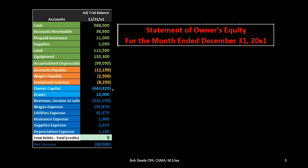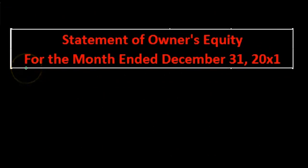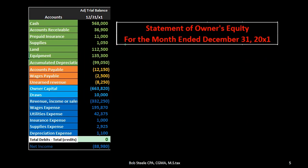Now we're going to construct the statement of owner's equity. Note that we're going to have 'for the month ended December 31, 20X1' — similar to the income statement, this is a timing statement rather than a point in time as expressed on the balance sheet. The balance sheet will have just the one date, while the income statement and statement of equity will have this date range, typically expressed as 'for the month ended' — in this case, December 31st, meaning December 1st through December 31st.